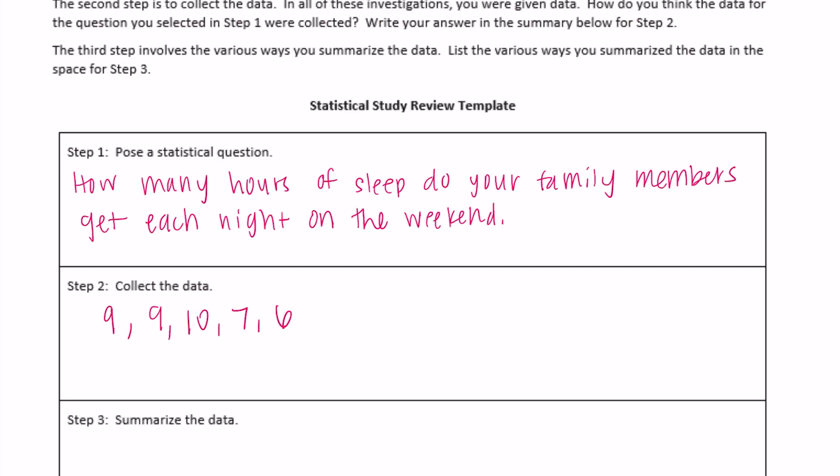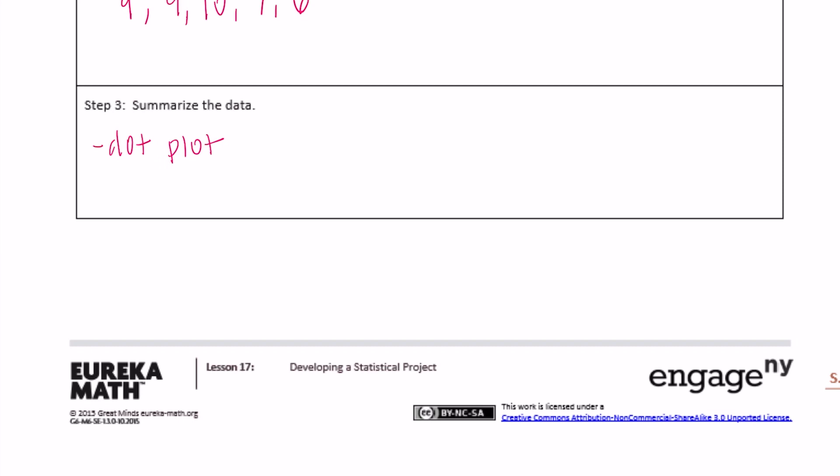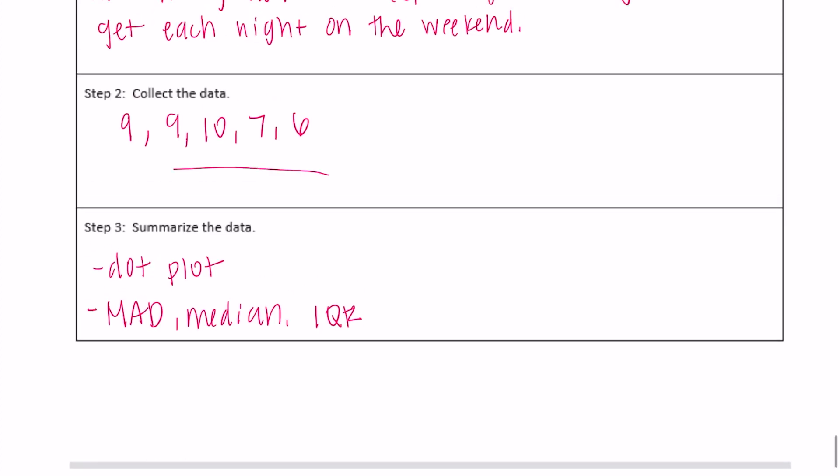So step 3 says summarize the data. What you can do is maybe put it into a dot plot, you could do a box plot. So summarizing the data is just a way to show what the data is saying. Numerical summaries, you could find the MAD, you could find the median, you can find the IQR. It's going to be a little bit harder if you only have a few numbers, but if you really want to get more data you can also just make some up for yourself.